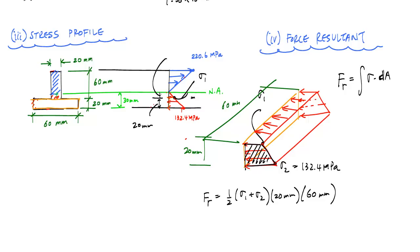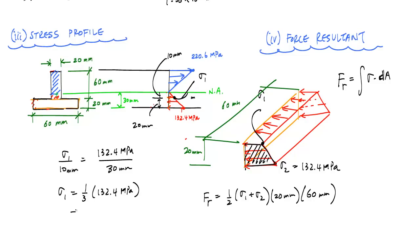The way that we can calculate this location is by similar triangles. If the neutral axis depth is 30 millimeters, this is 10 millimeters. So by similar triangles, you could say sigma 1 over 10 millimeters equals 132.4 megapascals over 30 millimeters, which makes sigma 1 just one-third of 132.4 megapascals. That is 44.13 megapascals.